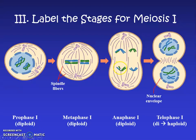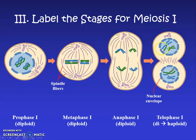Note that crossing over happens in prophase 1. By telophase 1, two new nuclei and two separate cells are forming, and now each cell only has one copy of the big chromosome and one copy of the little chromosome — meaning they're starting to be considered haploid, because they have half the original number of chromosomes.